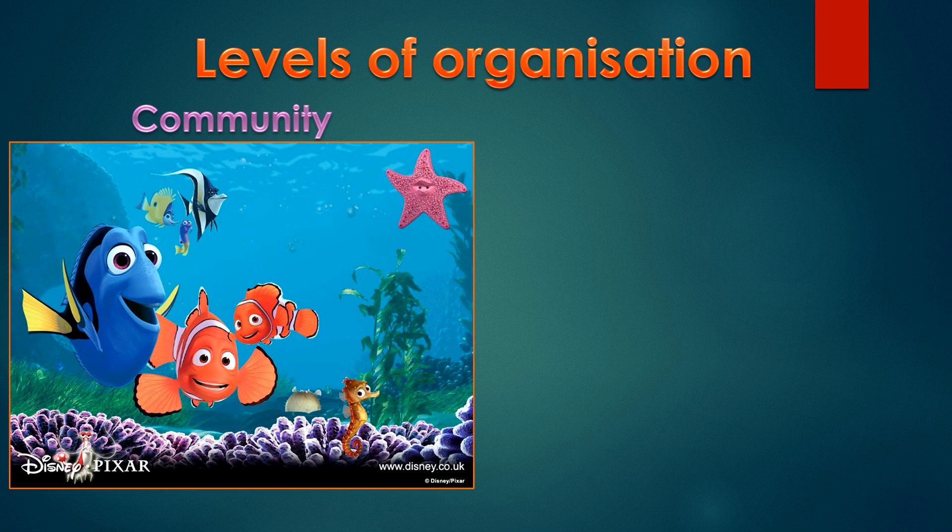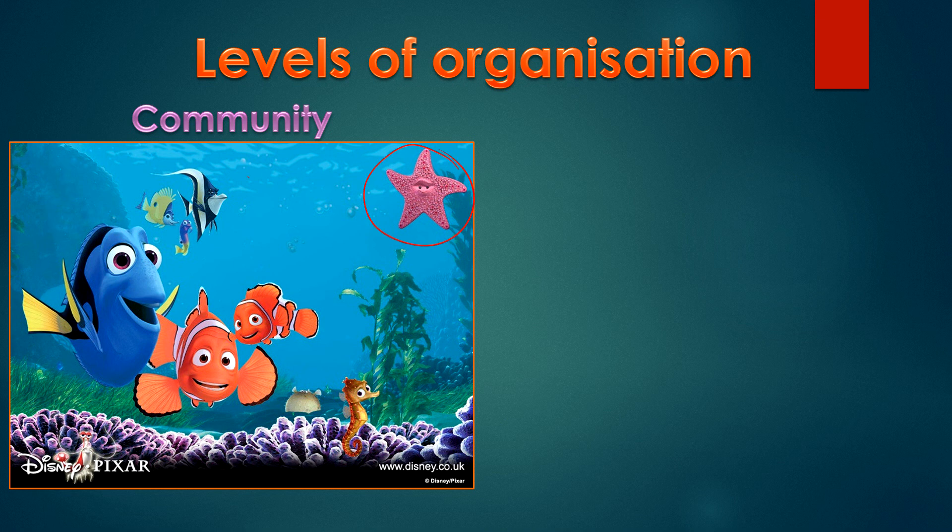The next level of organisation is community. A community is all the populations that includes different species that can live and interact together in an area. We could think of it as Dory and Marlin when they go on their journey, or we could also think of it as the fish tank.